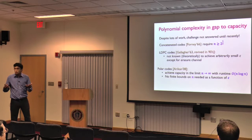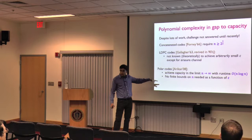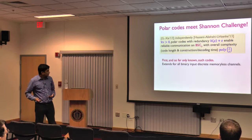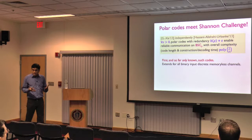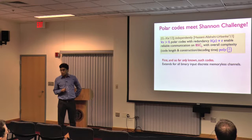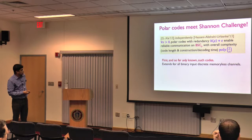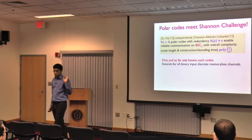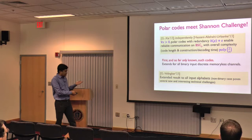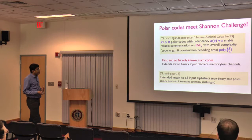In 2008, Arikan introduced polar codes — a widely celebrated, remarkable invention. He proved they achieve capacity in the limit of large n with complexity only n log n. However, he gave no finite bounds on n as a function of epsilon. We proved, building on Arikan's polar codes, that these codes allow operating within epsilon of optimality with polynomial overall complexity — polynomial in 1/epsilon. This was done independently by researchers at EPFL, and jointly with my student Patrick Shea. These are the first and only known codes with this property.